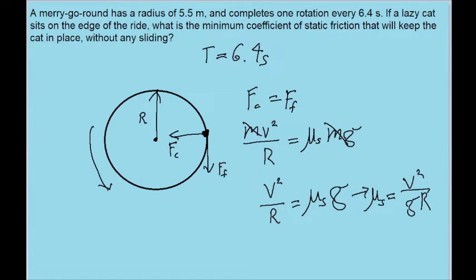Now the only thing in this equation left for debate is v. We're not given the speed of the edge of the merry-go-round directly. We can figure it out from the rotation time.